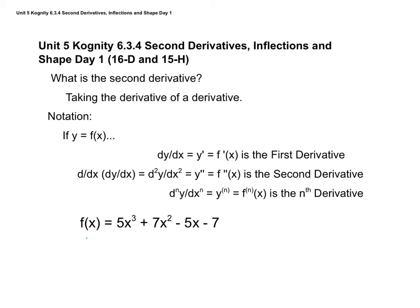For example, if I have f(x) = 5x³ + 7x² − 5x − 7, we take the derivative to get 15x² + 14x − 5. You'll notice — and this happens with polynomial functions — we started with a cubic and the derivative is a quadratic. If I take the derivative again, I end up with 30x + 14, which is a line.